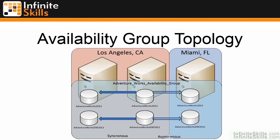Here is the basic topology for an Always-On Availability Group configuration. We have two sites — one in Los Angeles and one in Miami, Florida — with two databases configured on three servers. Two servers are in Los Angeles and one is in Miami. Each server has a copy of the AdventureWorks 2012 and AdventureWorks DW 2012 databases. The two Los Angeles servers use synchronous data movement, while the Miami server uses asynchronous data movement — a very flexible configuration.